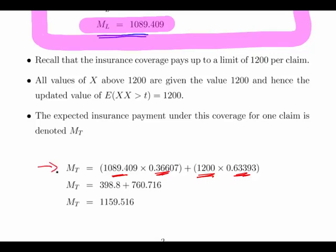Under this new regime where we introduced this cap of 1200, the new mean is 1159.516. That is the limited expectation given that you limit the maximum to 1200.